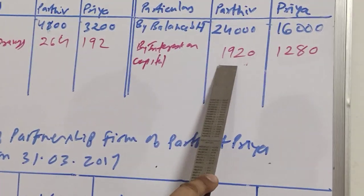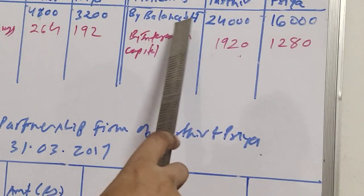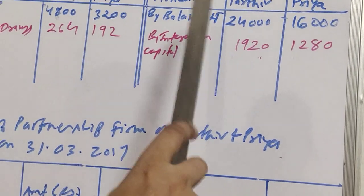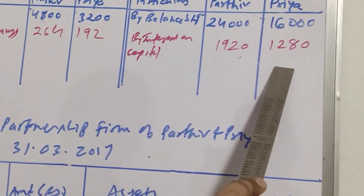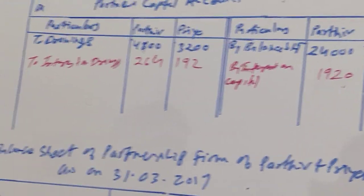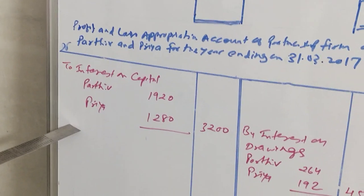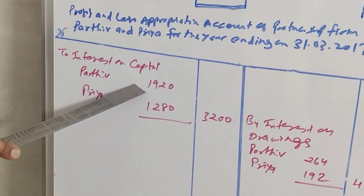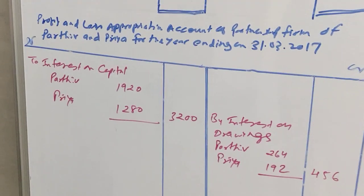Interest on capital — Parthiv: Rs.1,920; Priya: Rs.1,280. This is interest on capital at 8% per annum. The second effect of these two will be at the debit side of the profit and loss appropriation account: interest on capital for Parthiv and Priya, Rs.1,920 and Rs.1,280, totalling Rs.3,200.